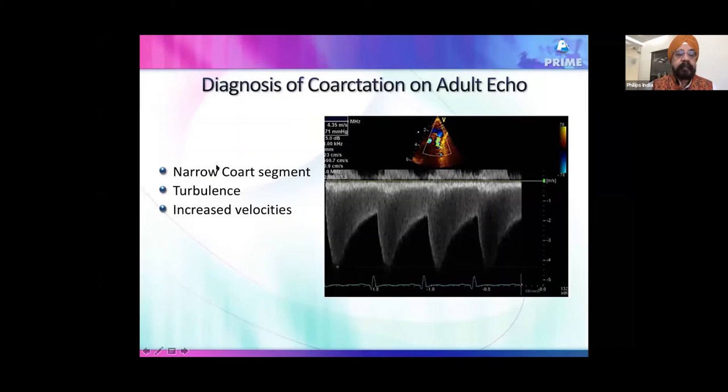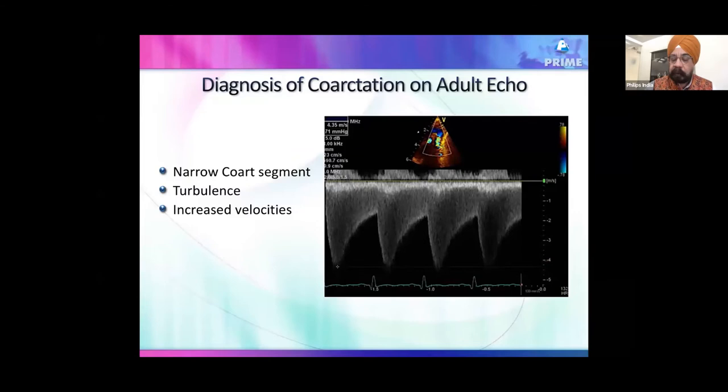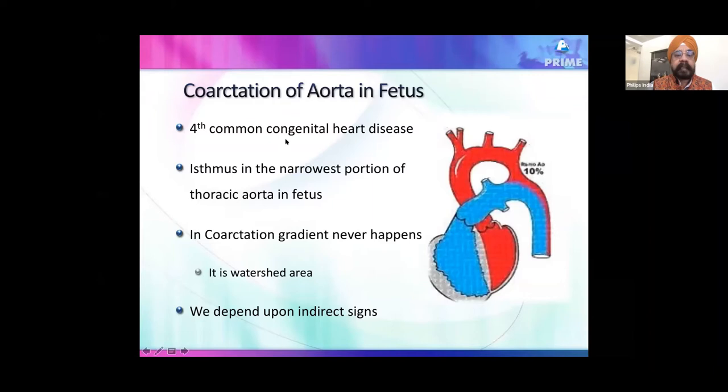For coarctation of aorta in adults, you see the coarct segment with turbulence, aliasing, and high systolic-diastolic velocities of 4–5 meters per second. But this does not happen in the fetus. Coarctation is the fourth or fifth most common congenital problem, yet it is the most commonly missed congenital heart problem in fetal echo.